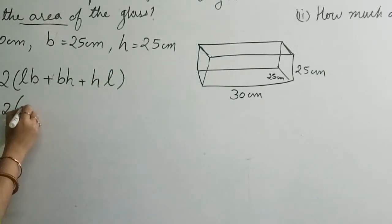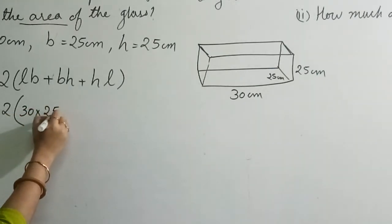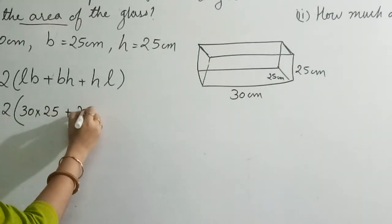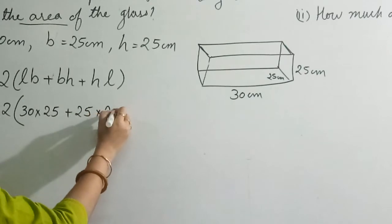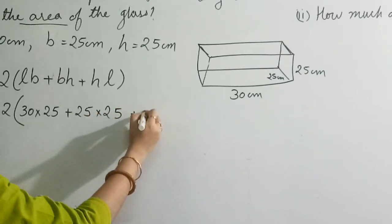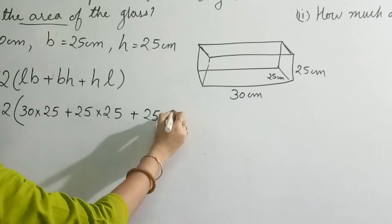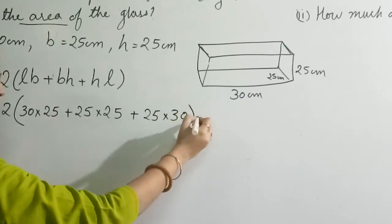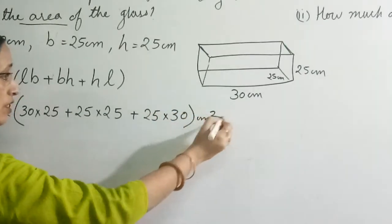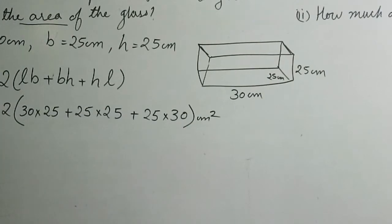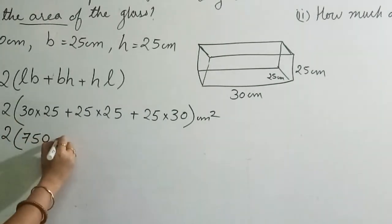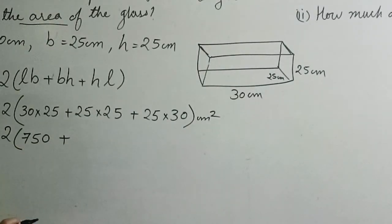We will put the value: 30 into 25 plus 25 into 25 plus 25 into 30. And since it is total surface area, so here it will be centimeter square. Now we will multiply: 30 times 25 is 750, plus 25 into 25, so your answer should come 625.